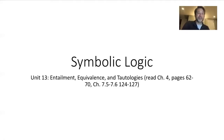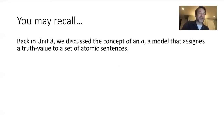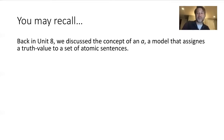So we're going to start today by thinking back to some material we covered at the beginning of the section on natural deduction. You may recall there that we talked about the concept of an alpha. An alpha was a model that assigns a truth value to a set of atomic sentences. So if you're given some set of atomic sentences, the alpha is going to tell you which ones of those things are true and which ones are false.